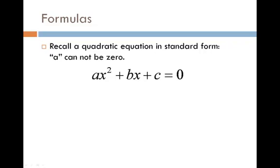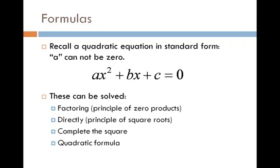Remember that a quadratic equation in standard form looks like this. The key feature we want to look at is that x squared term. Because we don't want to get rid of that, the a in front of x squared cannot be zero. When you're dealing with one of these, there are basically four ways you can solve it.